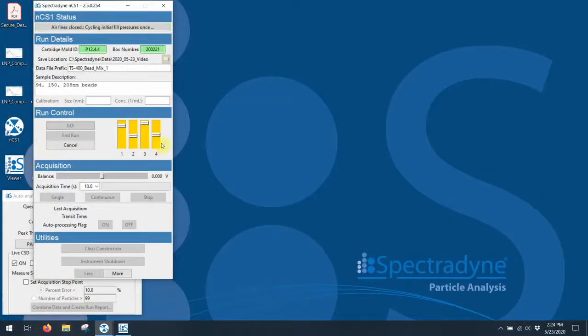The fill monitors shown here are monitoring the state of the fluids inside of the cartridge. As these turn green, they're indicating that the cartridge is ready and you can now begin the actual measurement.